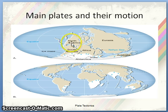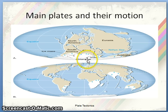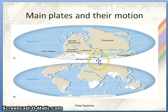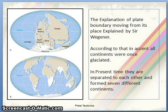Subsequently, these landmasses divided into many different plates, such as the North American plate, South American plate, African, Eurasian, Australian, Antarctic, and Indian plate. Here you can see the Indian plate and the explanation of plate boundary movement.